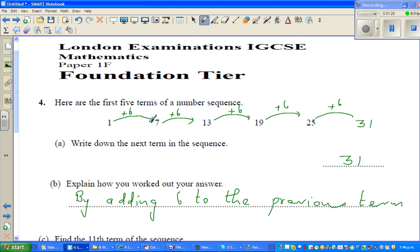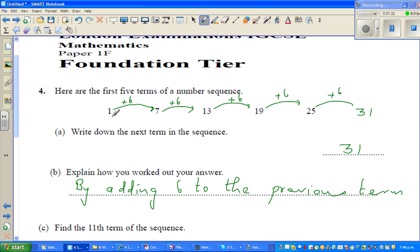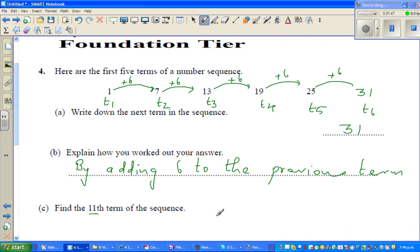There's a common difference of 6 there. This is your first term, so you can say this is your T1, T2, T3, T4, T5. There's a formula, but I don't want to discuss the formula. The next number, you want to write the 11th term, so you can say T6 is 31, your sixth term is 31.